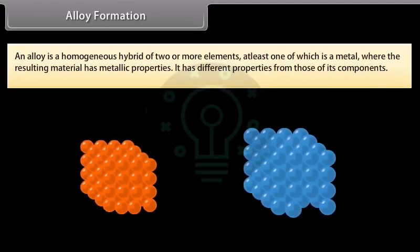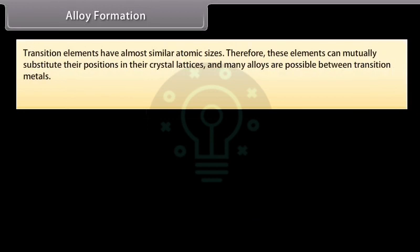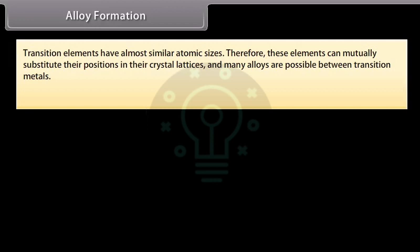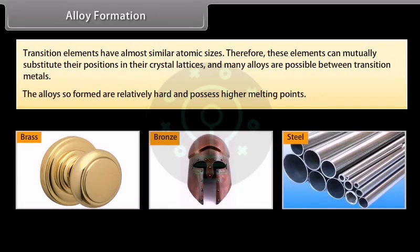An alloy is a homogeneous hybrid of two or more elements, at least one of which is a metal, where the resulting material has metallic properties and different properties from those of its components. Transition elements have almost similar atomic sizes, so they can mutually substitute positions in crystal lattice and many alloys are possible. For example, brass, bronze, and various types of steel. The alloys so formed are relatively hard and possess higher melting points.